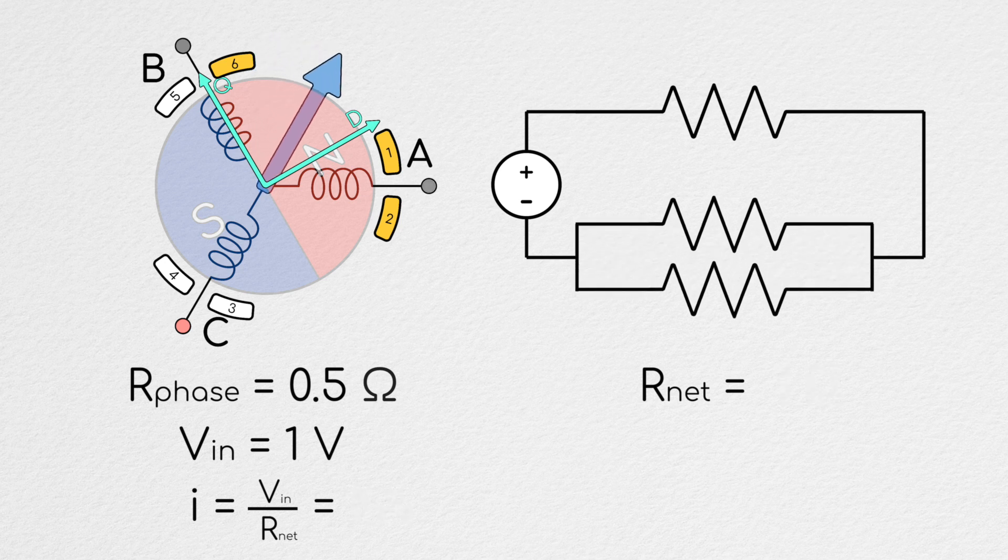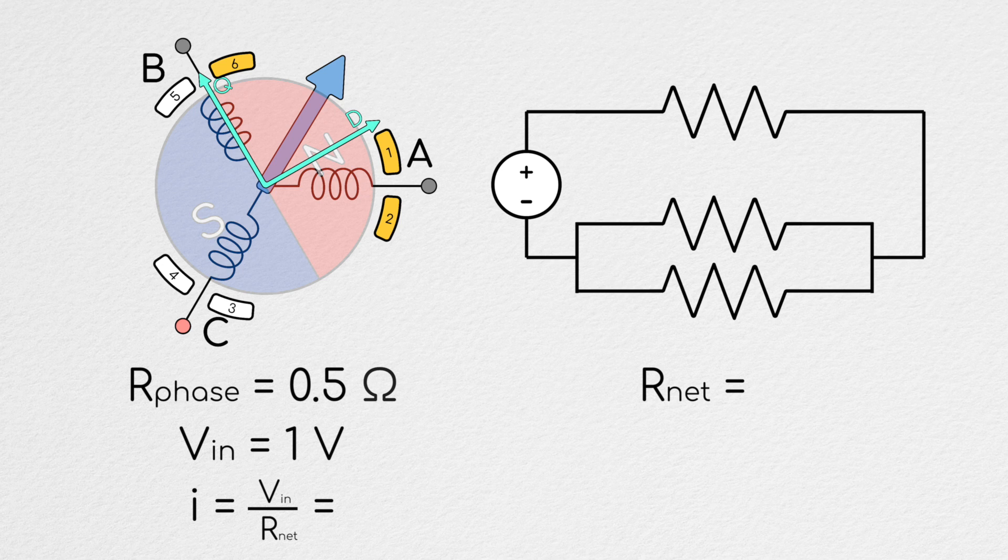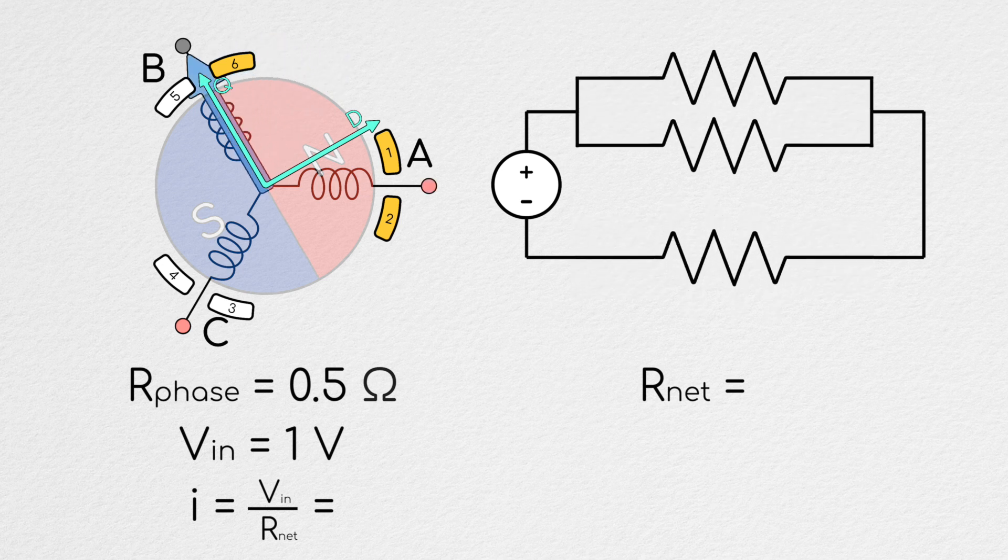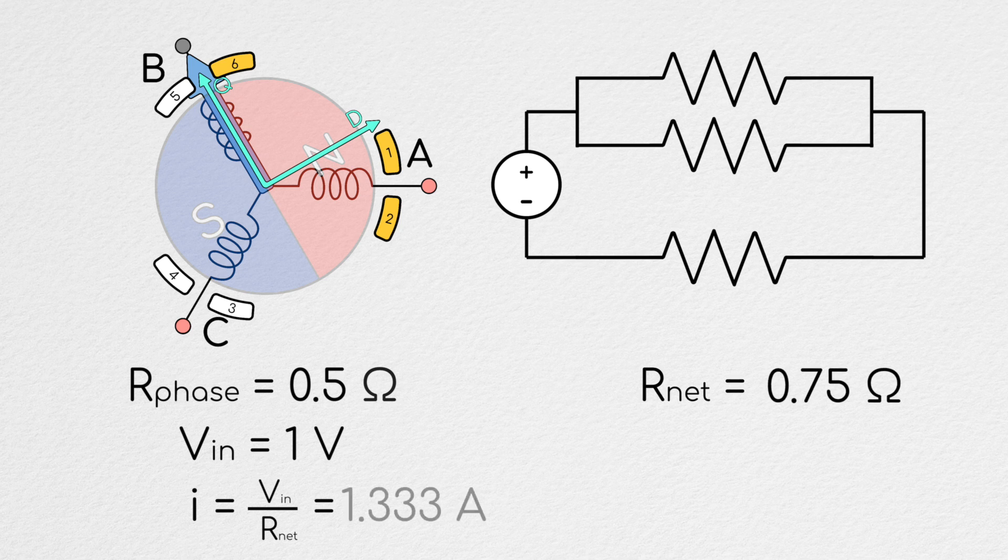However, if we connect one phase to high and two to ground, or one phase to ground and two to high, the net resistance of the two phases in parallel with each other drops to a quarter of an ohm. Therefore, the total resistance is now three quarters of an ohm, and if we applied one volt to this circuit, one and one-third amps would run through it.